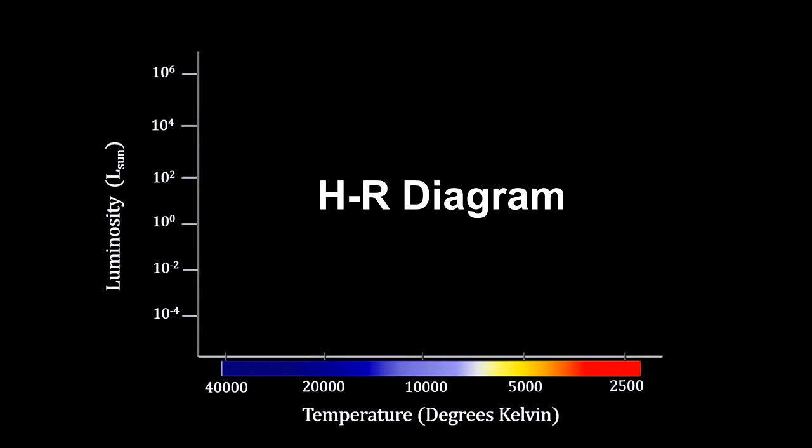In 1913, Hengnorr Hertzsprung and Henry Russell began mapping star temperatures against their luminosity. Note that the horizontal axis maps temperatures in the decreasing direction.